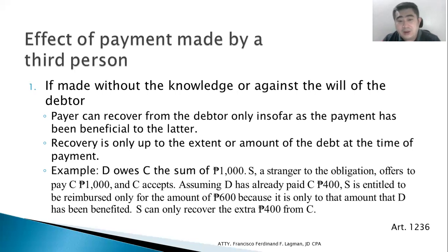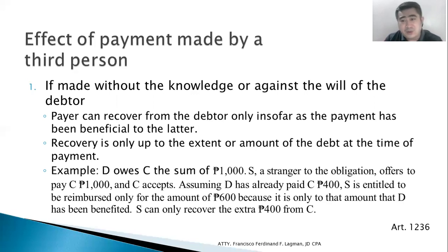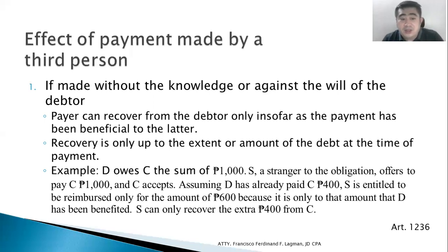So D benefited only 600 pesos, because he had already paid 400. The third person S did not know this. Can the third person not recover the money? The answer is no — he can recover, but cannot collect from the debtor for the portion already paid. The third person can recover from the creditor instead. The creditor cannot keep 1,000 pesos plus the 400 pesos already paid by D — that would be unjust enrichment. However, the third person's problem with D is limited because the payment was made without D's knowledge or against D's will.